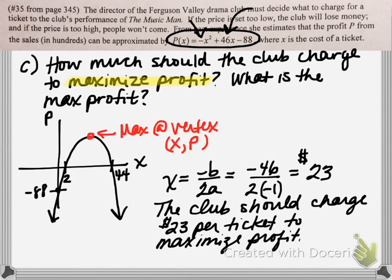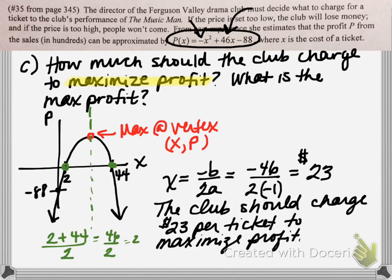Another way to find the vertex: since we already found the x-intercepts, the vertex lies right in the middle on the axis of symmetry — right between the x-intercepts. You could calculate the midpoint between 2 and 44: 2 plus 44, divided by 2. You're just averaging those values, and 46 divided by 2 is indeed 23. That gives you the x value of the vertex as well.